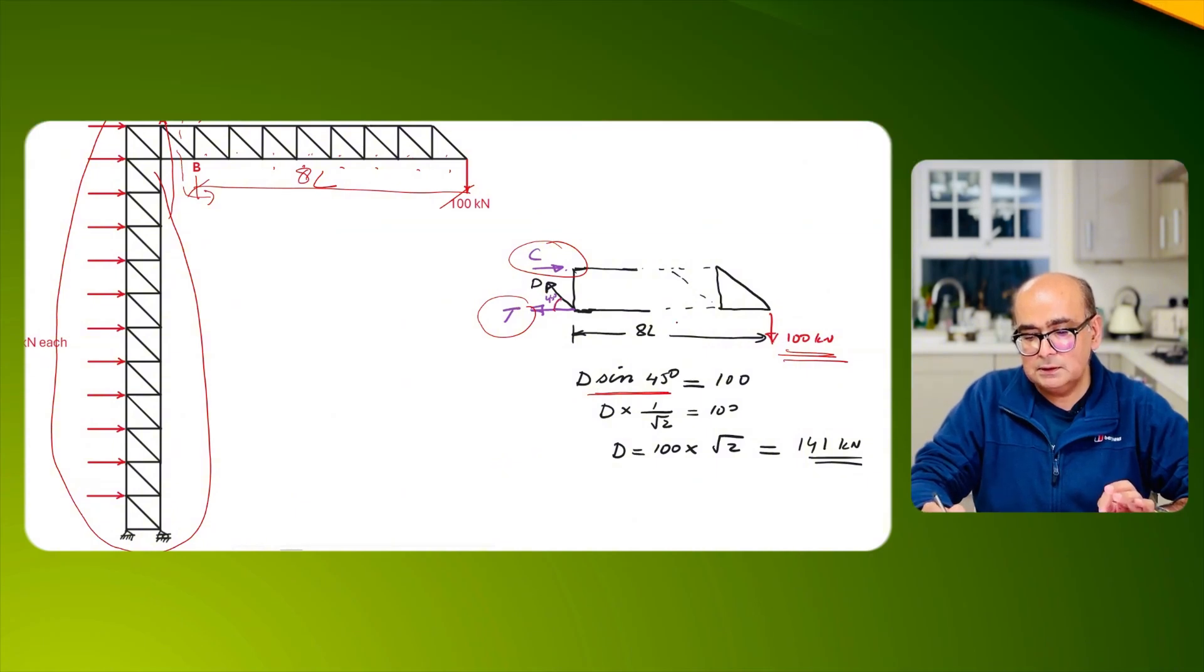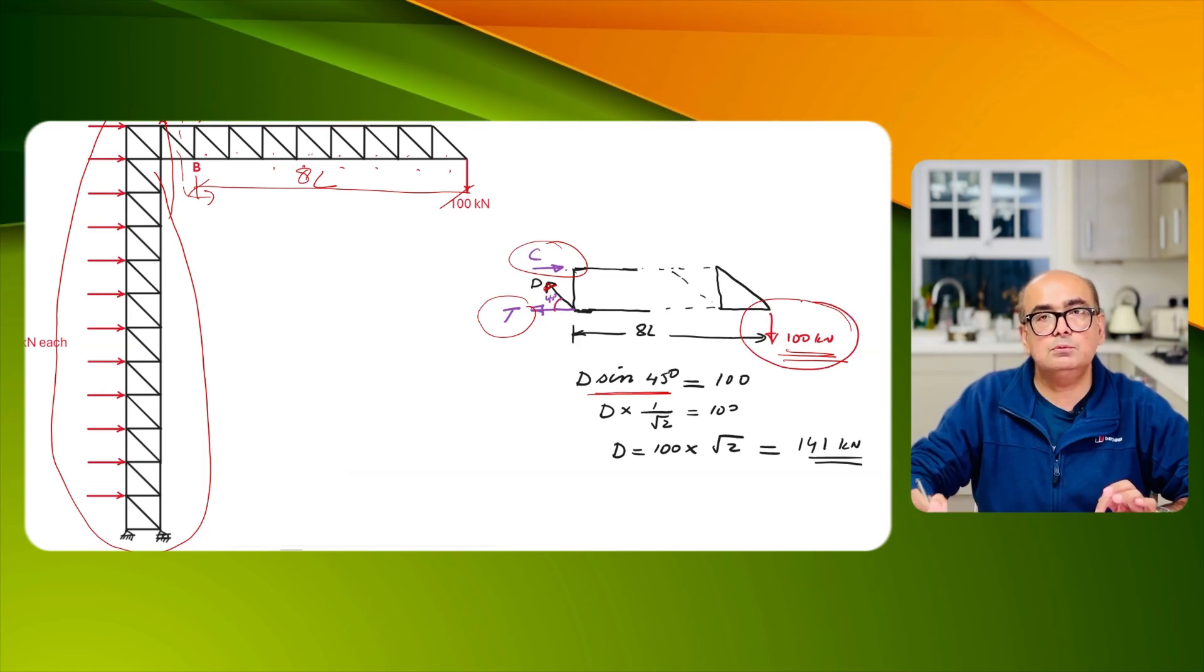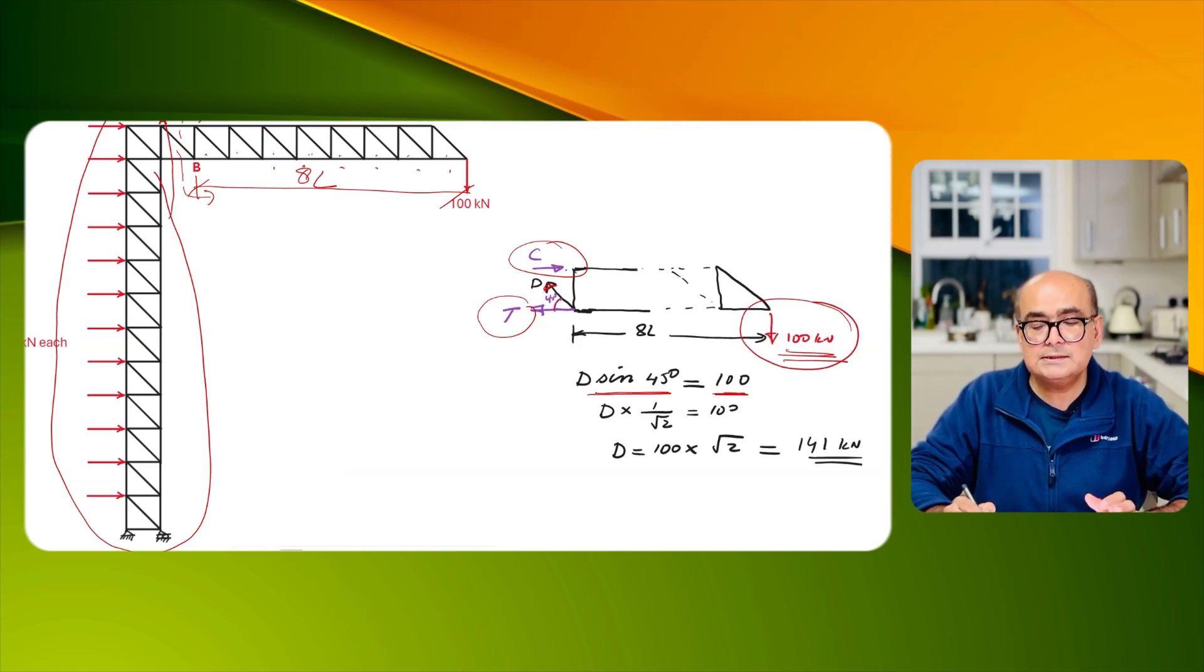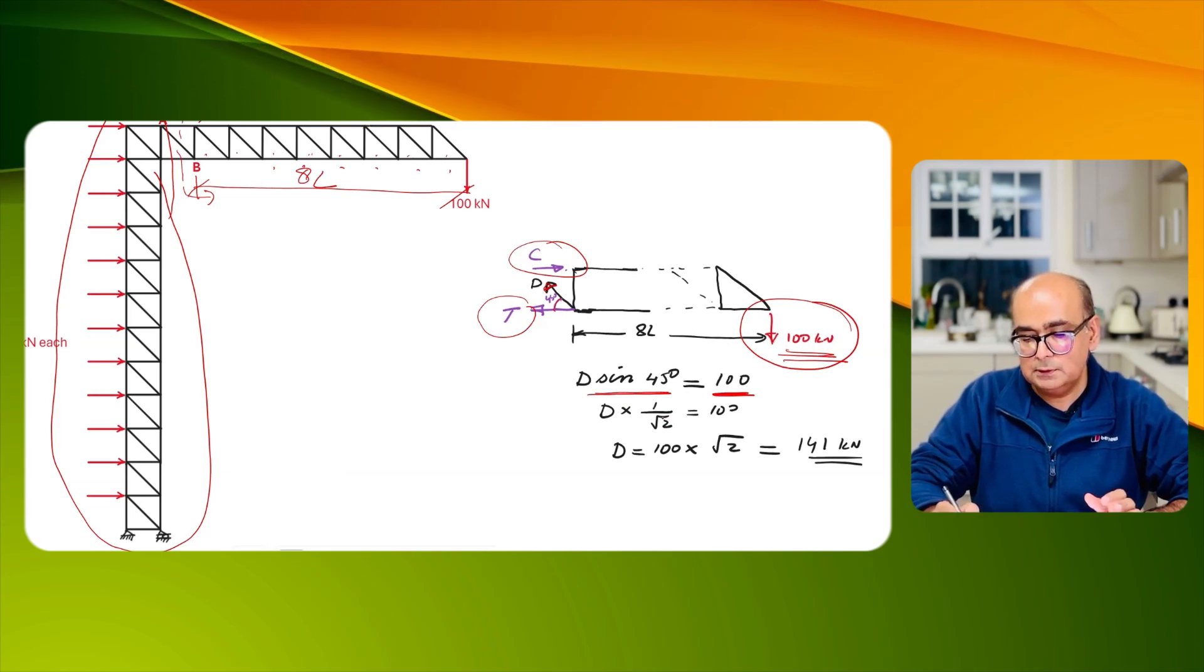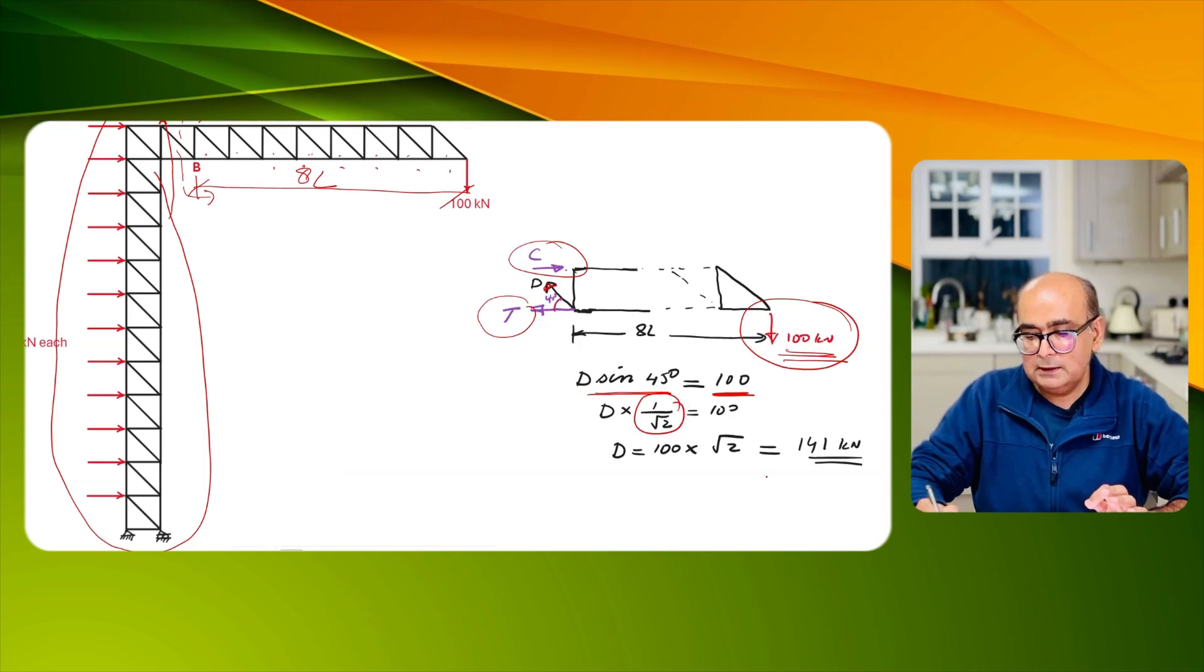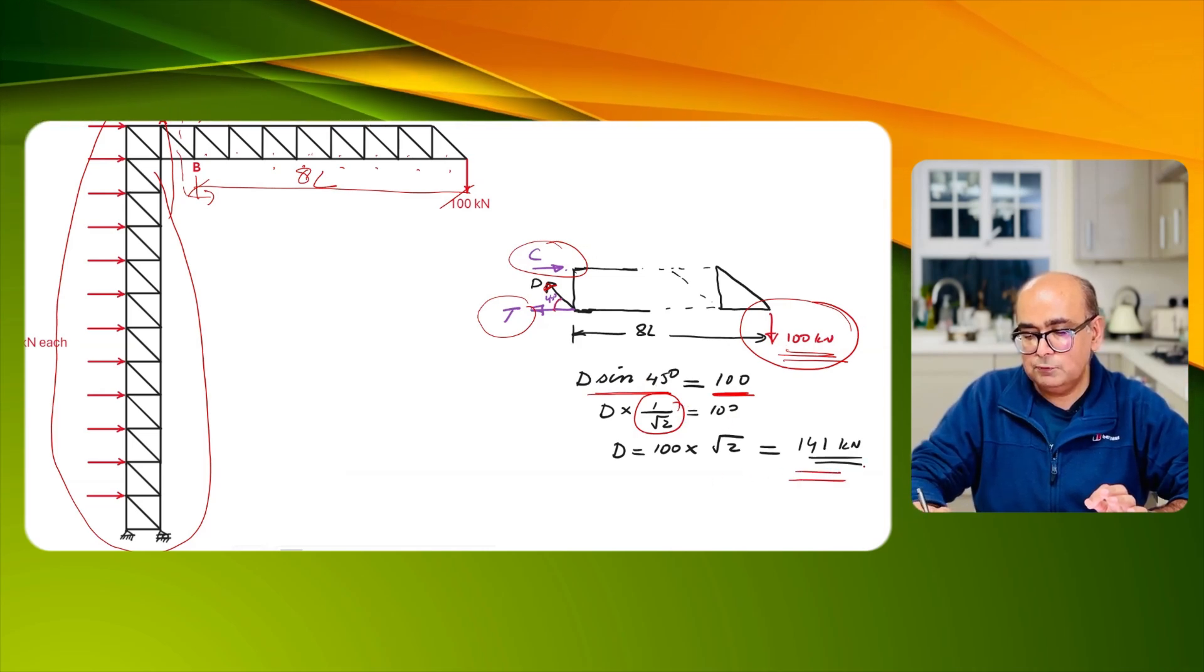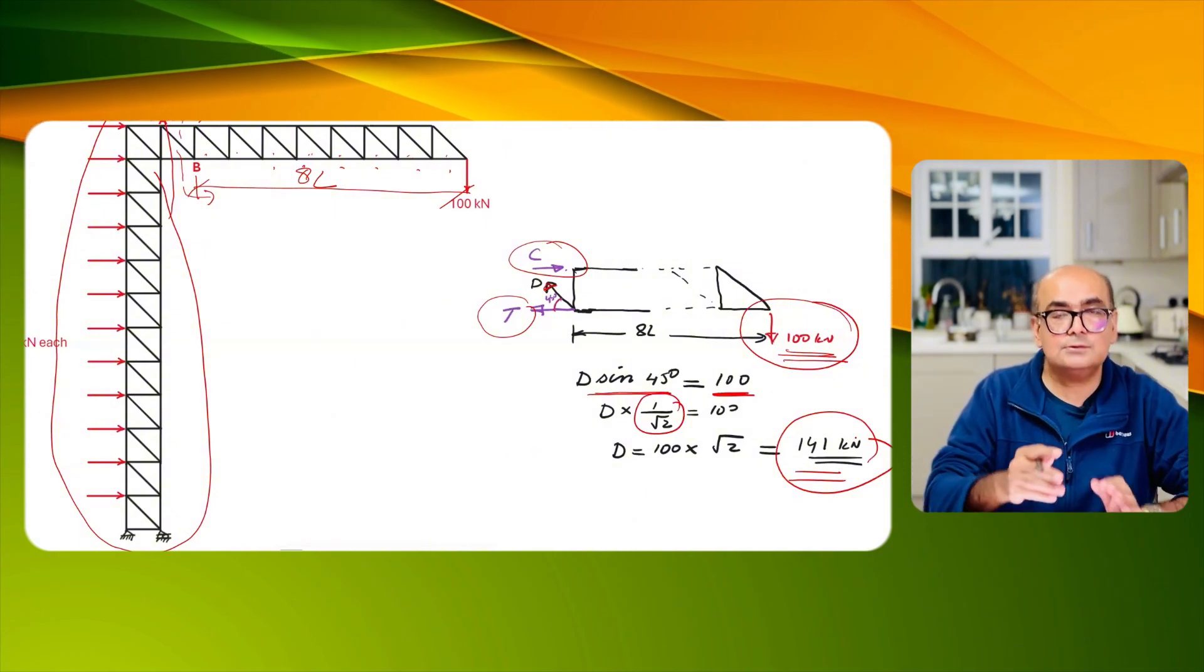D sin 45 will give me the vertical load. The entire load is balanced by this diagonal so the direction has to be vertical because we just have downward load here. So d sin 45 will be equal to 100, d is the diagonal where we want the force, sin 45 is 1 over √2.